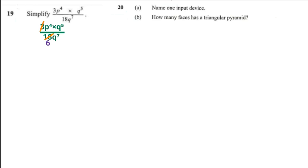Once I've done this, then we're going to write what we're remaining with. We're remaining with p to the power of 4 multiplied by q to the power of 5 divided by 6q raised to the power of 7.